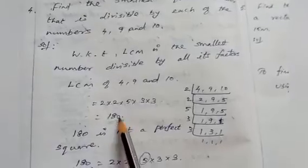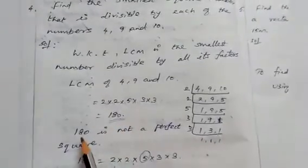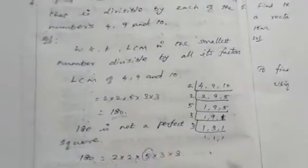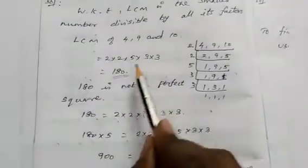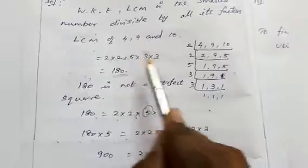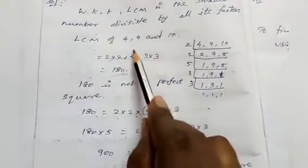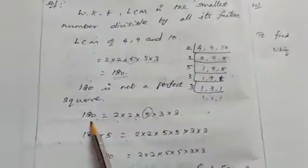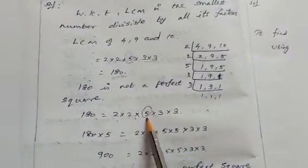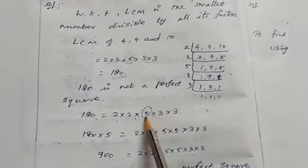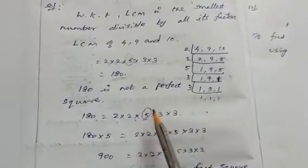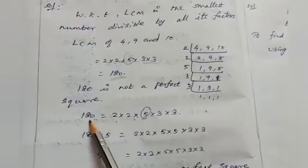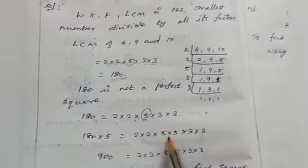So the LCM is 180. Here 180 is not a perfect square. We check the prime factors: 2 × 2 is one pair, 3 × 3 is a pair, but the prime factor 5 has no pair. So 180 = 2 × 2 × 5 × 3 × 3, and since 5 has no pair, we must multiply by 5.